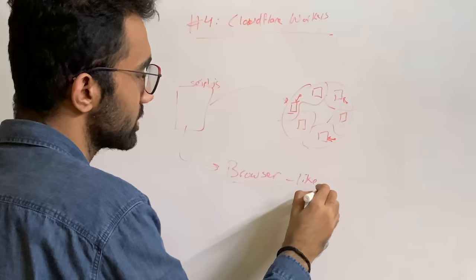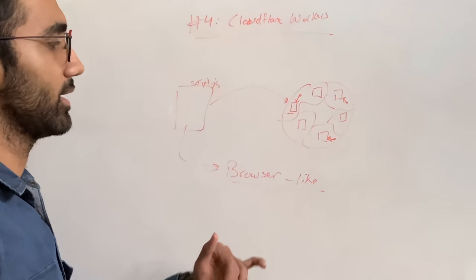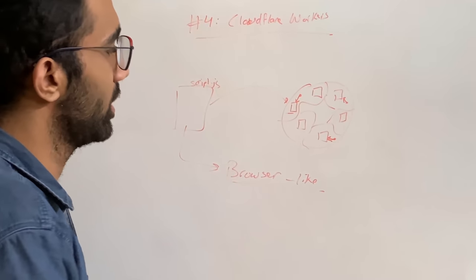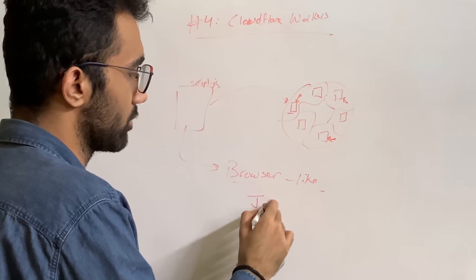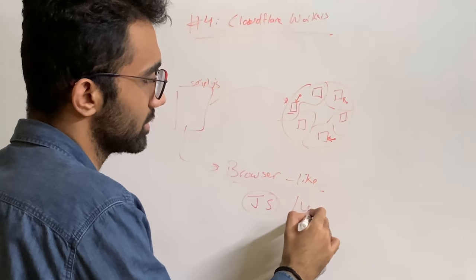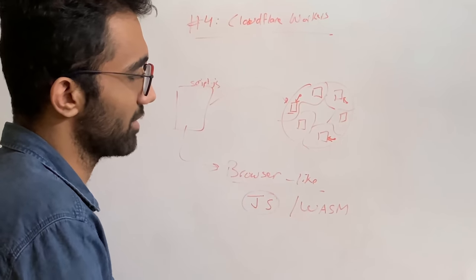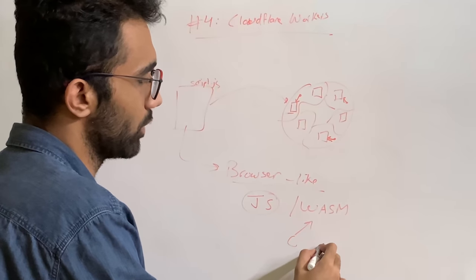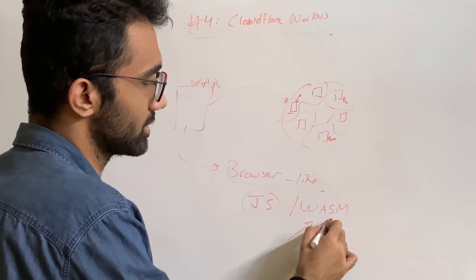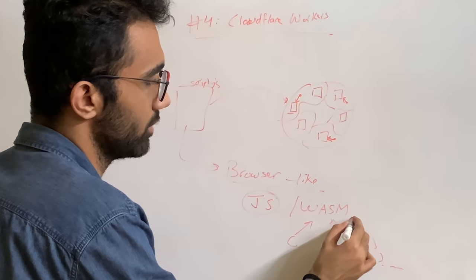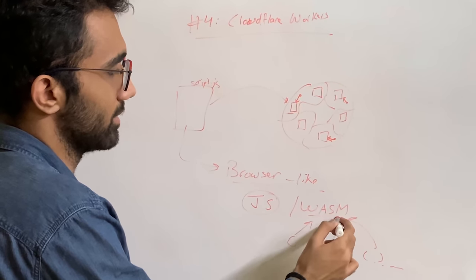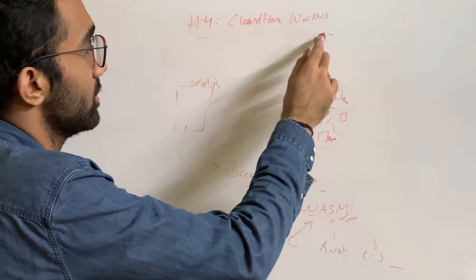And the way Cloudflare does that is that it executes your script in a browser-like environment. Instead of Node.js, you get a little bit of a restrictive environment, but it's pretty much still able to understand and execute a lot of JavaScript and a lot of WASM languages, not exactly WASM languages, languages which can be compiled to WASM. So C, Rust, pretty much any other language you can think of.